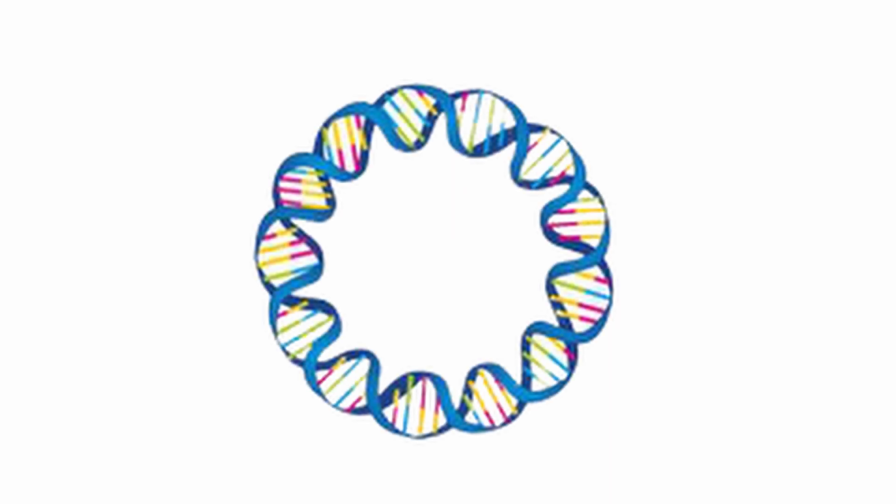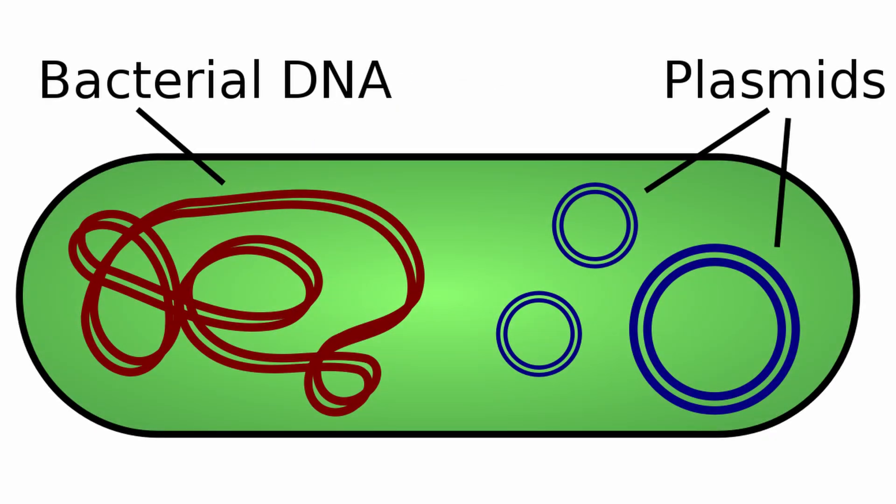In this example we will be working with an expression vector or plasmid, which is a small circular double-stranded DNA molecule separated from the chromosomal DNA, most commonly found in bacteria. We use these plasmids for gene expression in cells.